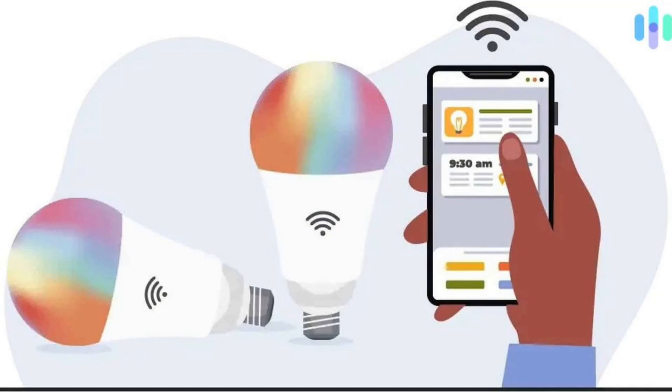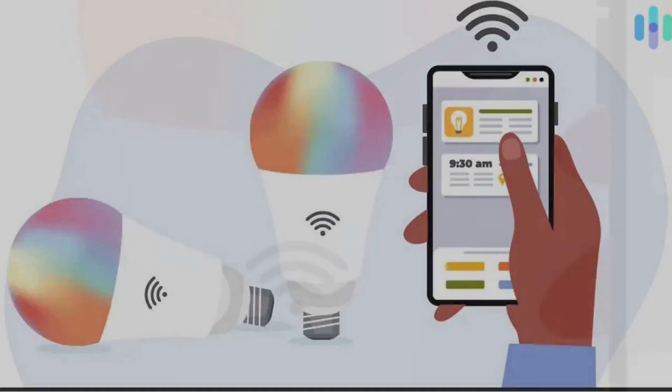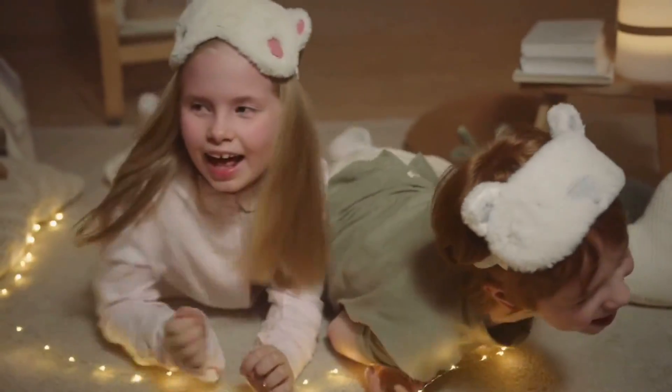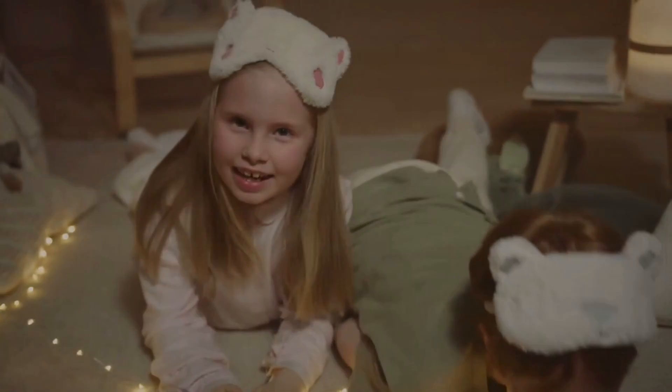1. Open the Google Home app. 2. Tap Rooms and select Add Room. 3. Name your room and tap Create Room. 4. Tap Devices and select the lights you want to add to your room. 5. Tap Save to add your lights to the room.